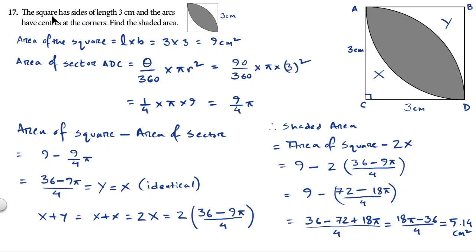In this question it says the square has sides of length 3 cm and the arcs have centers at the corners. Find the shaded area. So this is the shaded area which we need to find.